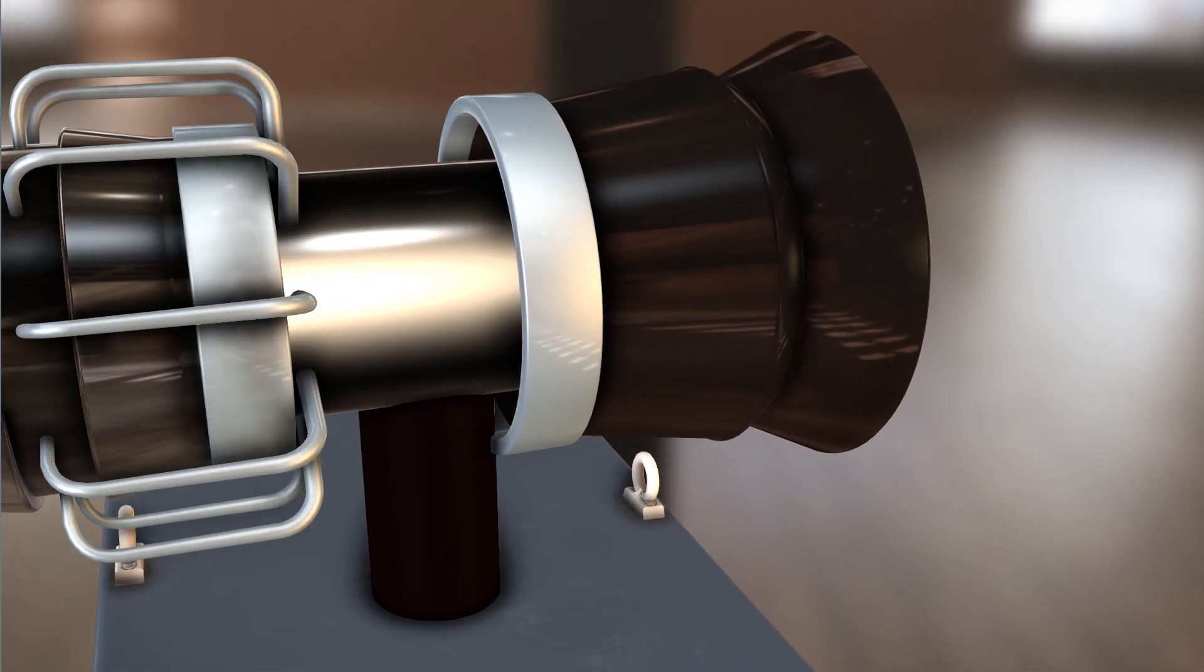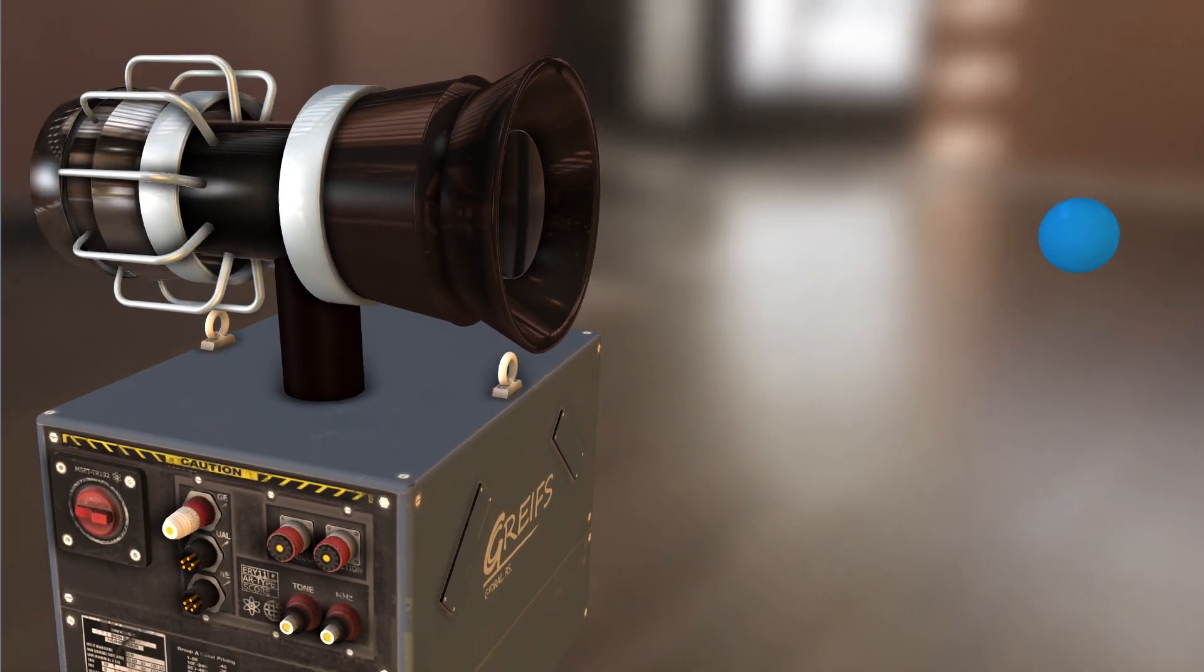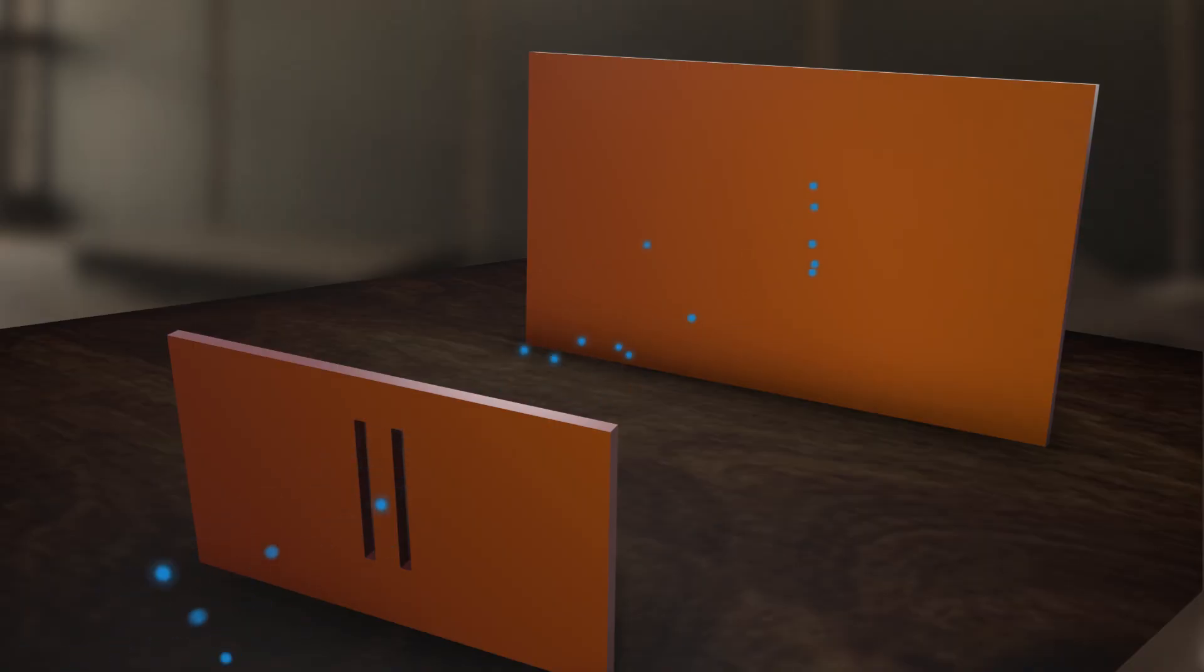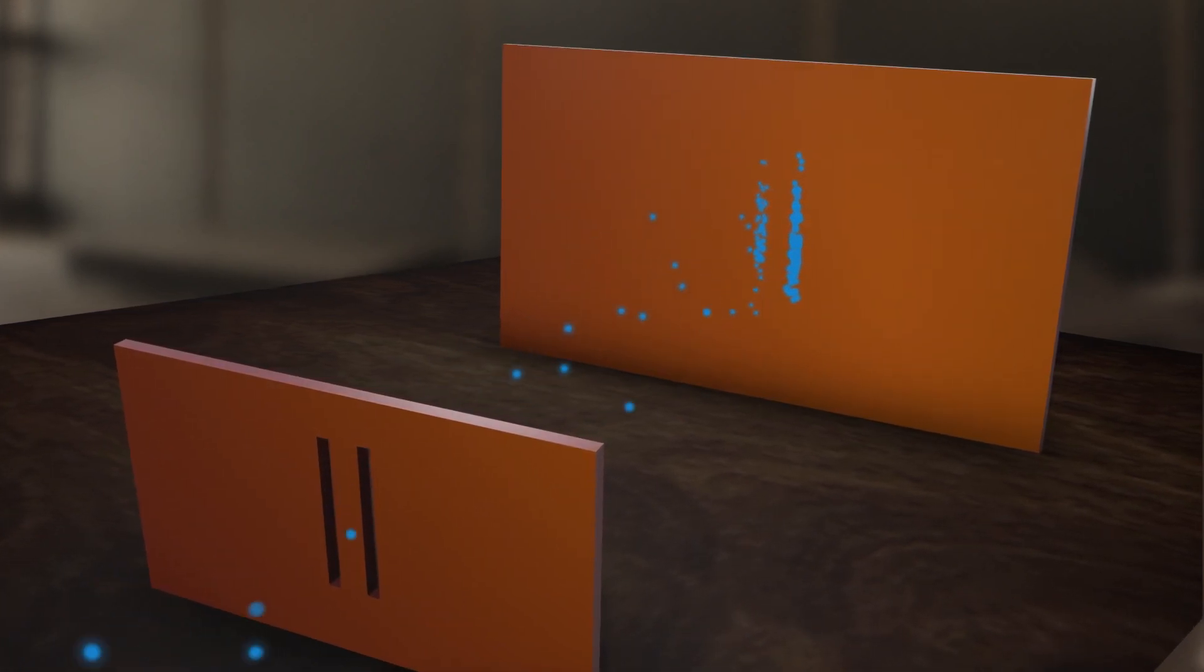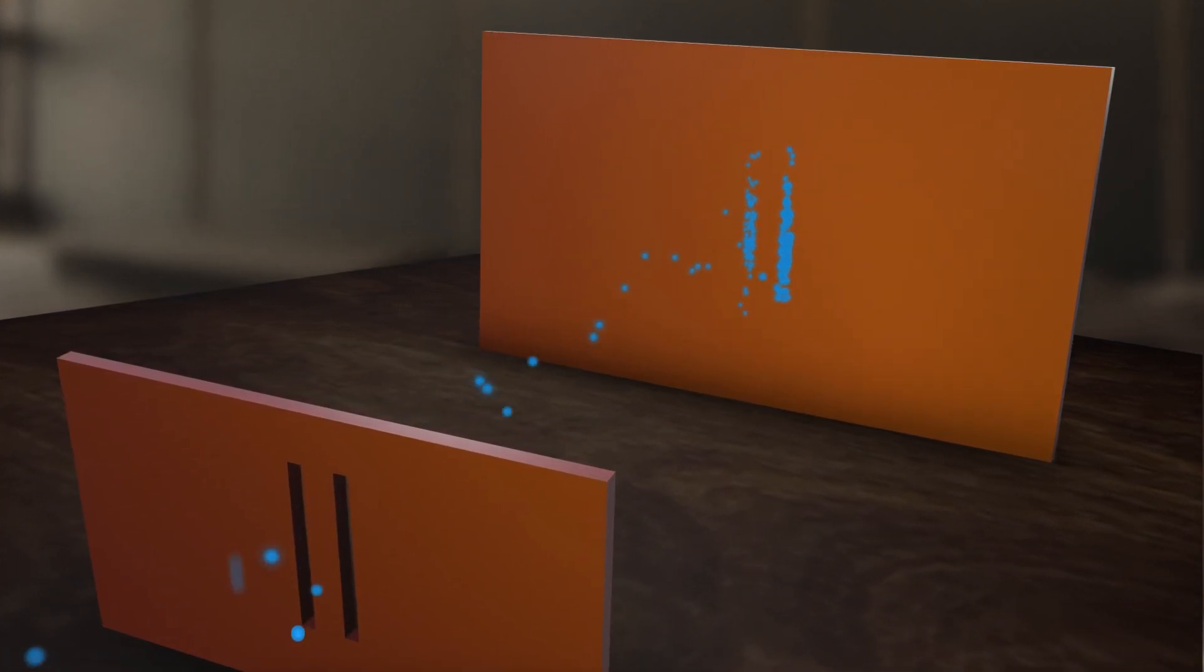But first let's do the experiment of sending tiny balls towards the screen through a plate pierced with two small slits. The impact marks on the screen will consist of two coarse and parallel lines, which is normal.